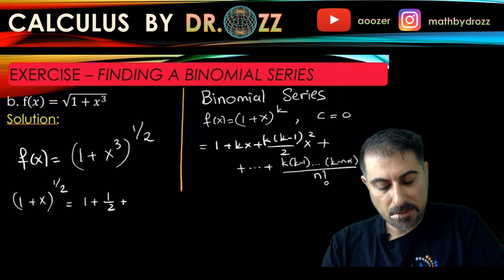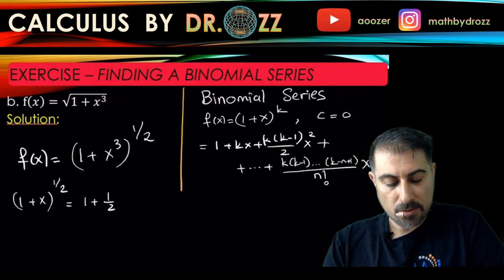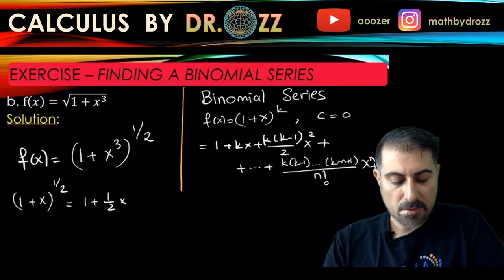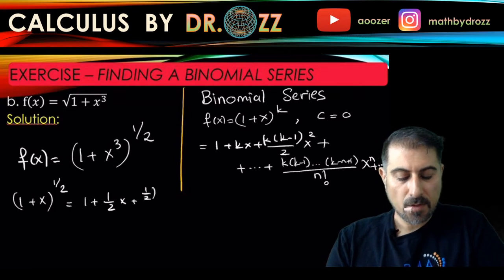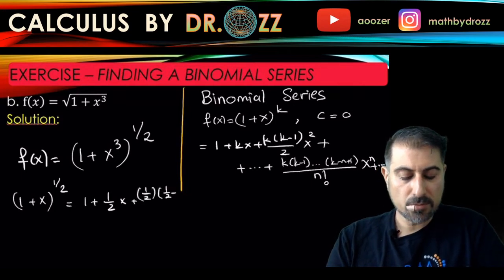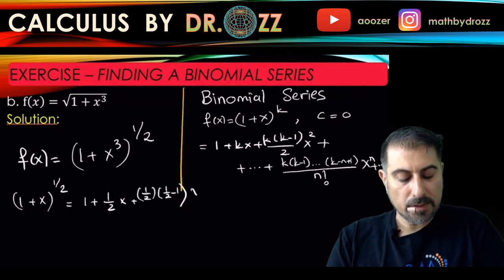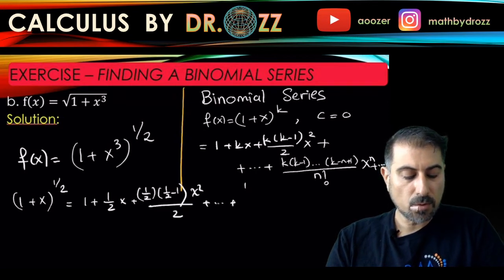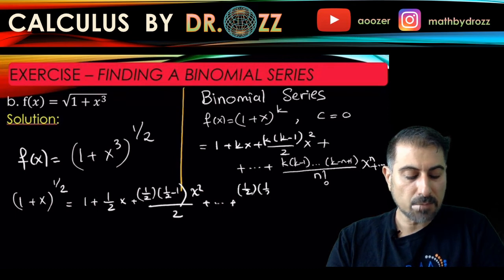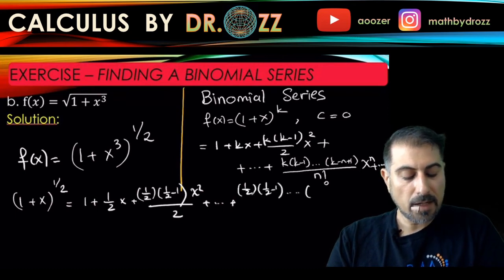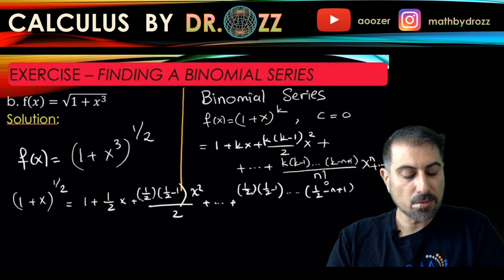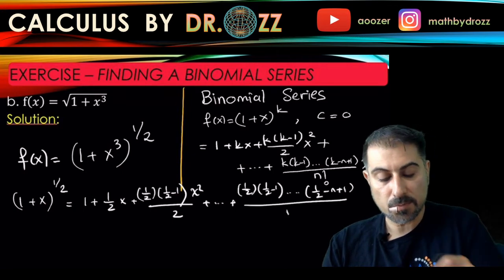And then (1/2)(1/2)(1/2 - 1) x² over 2, and going all the way down here: (1/2)(1/2 - 1)...(1/2 - n + 1) divided by n! x^n. So let me just put a line here so nothing is going to get confusing.